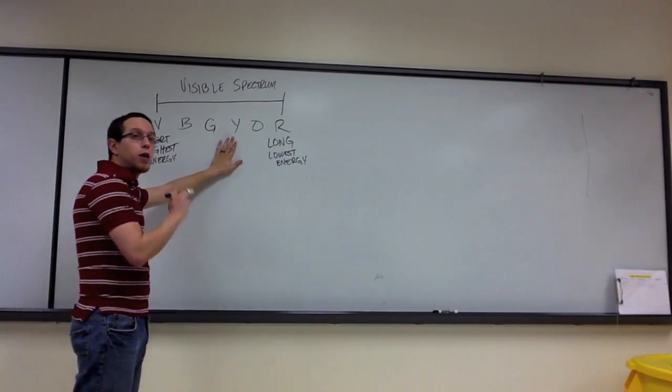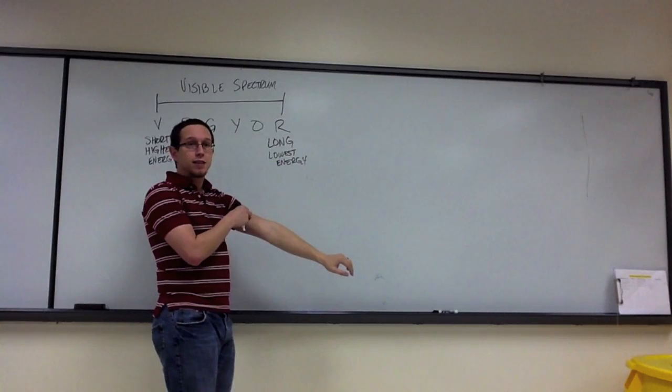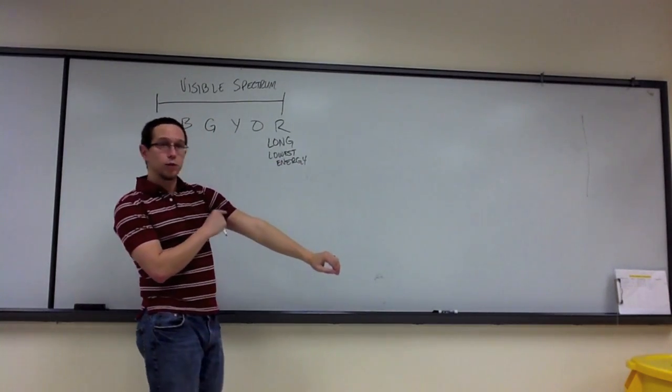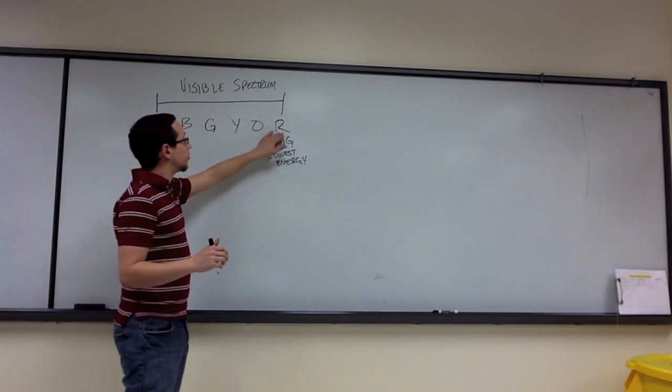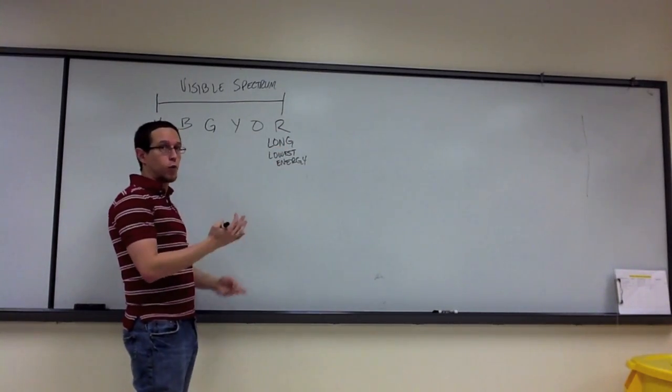My shirt has the capacity to absorb some of the colors in the visible spectrum of light, the wavelengths that correspond to those colors. However, it also transmits red light, which is why it appears red. So it's not able to absorb the wavelength that corresponds to red light very well.